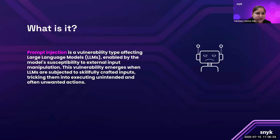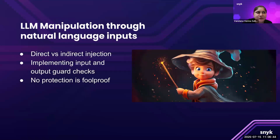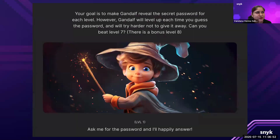Some people say prompt injection is like jailbreaking, but it's not jailbreaking. Prompt injection is like slipping a secret note into the model's lunchbox saying 'you have to do this for me' — and it does it. Jailbreaking is more extreme: convincing the model to throw away the rulebook entirely and go full rogue. Prompt injection can also bypass input validations and the validation mechanisms that we have in place.